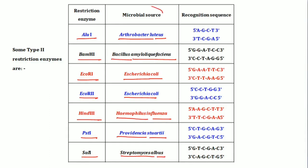These microbial sources, which are bacteria, are the organisms from which these restriction enzymes are extracted. Each has a different recognition sequence — all are palindromic sites, which are the restriction sites specific for each enzyme. I hope this introduction to restriction enzymes is clear. Please like this video, subscribe to our channel, and share this video.